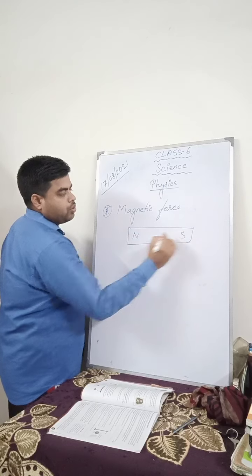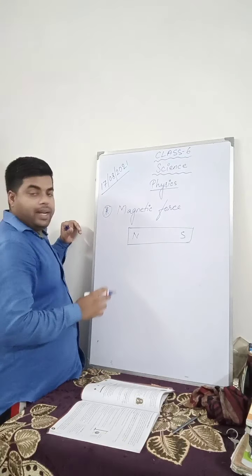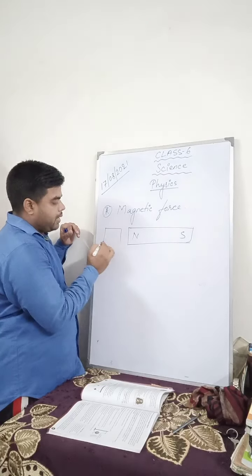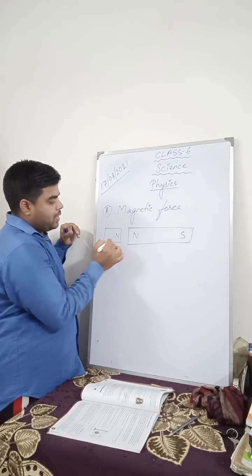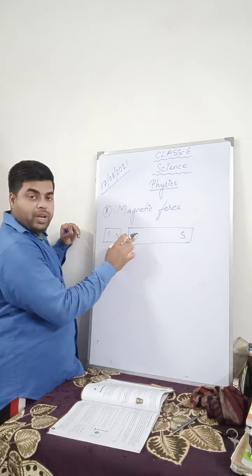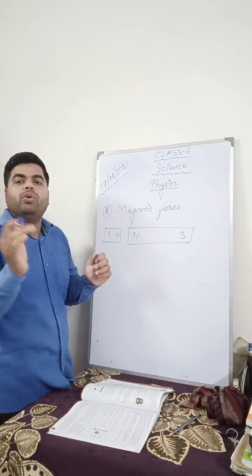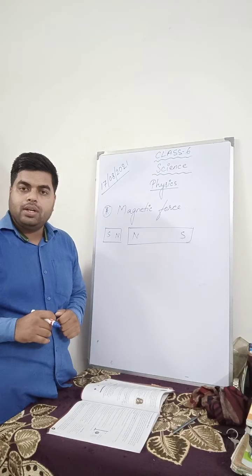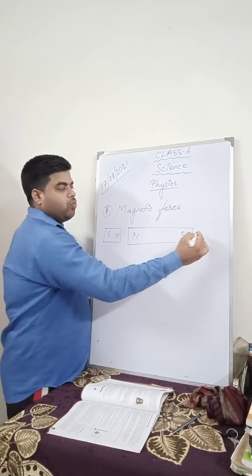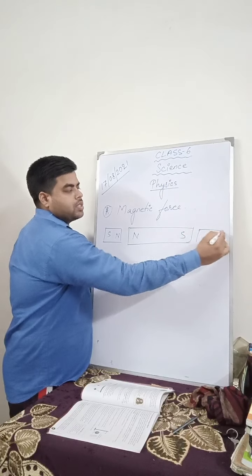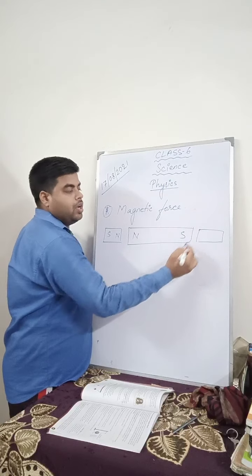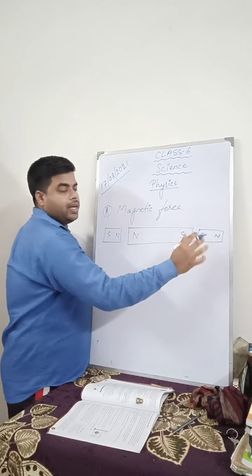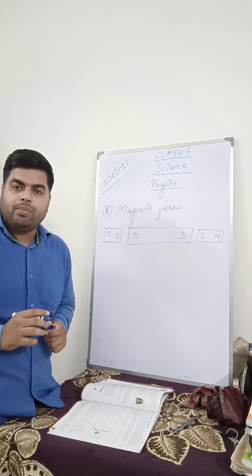A magnet has a north pole and a south pole. If you bring two magnets with the same poles side by side, they will not attract — in fact they will repel each other and move away. Whether you bring two north poles or two south poles together, they will repel each other.